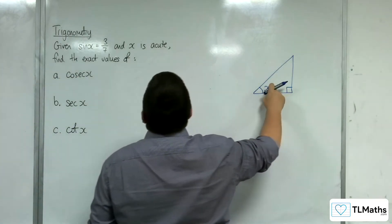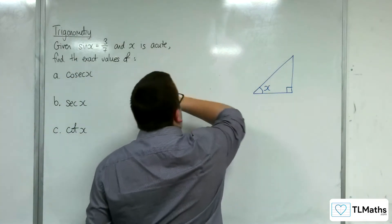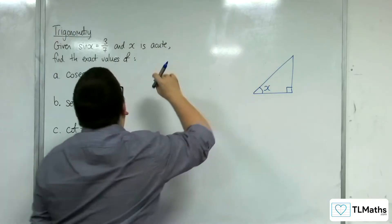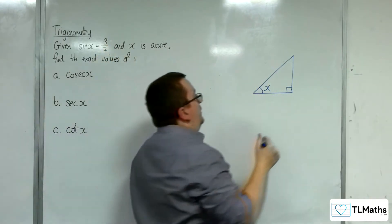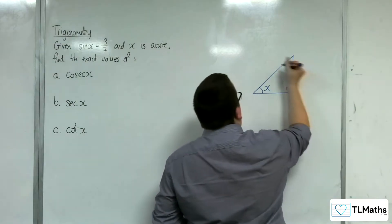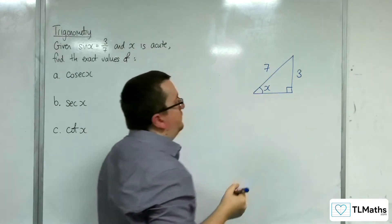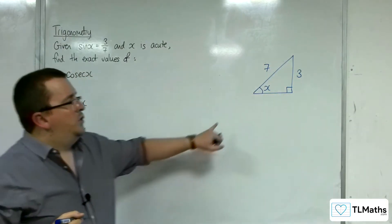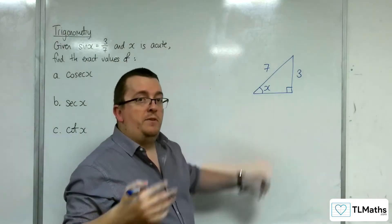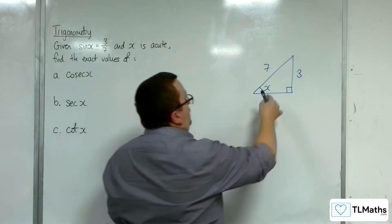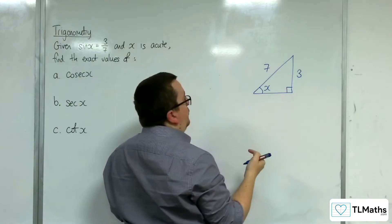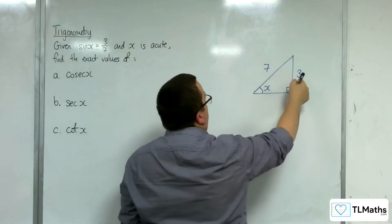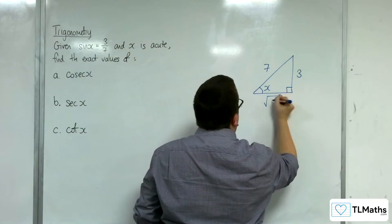Given that x is acute, sin x is 3/7. Sine is opposite over hypotenuse, so the opposite side is 3 and the hypotenuse is 7. The remaining adjacent side can be found using Pythagoras: √(7² - 3²) = √(49 - 9) = √40.